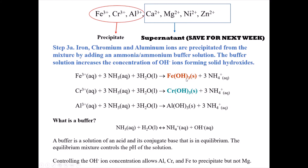Because iron 3+ and chromium 3+ are colored, so are their hydroxides. Iron hydroxide will have a rust color and chromium hydroxide will have a blue-greenish color. Aluminum hydroxide has no color—it's colorless, almost like glass that's precipitated out, and is very hard to see.